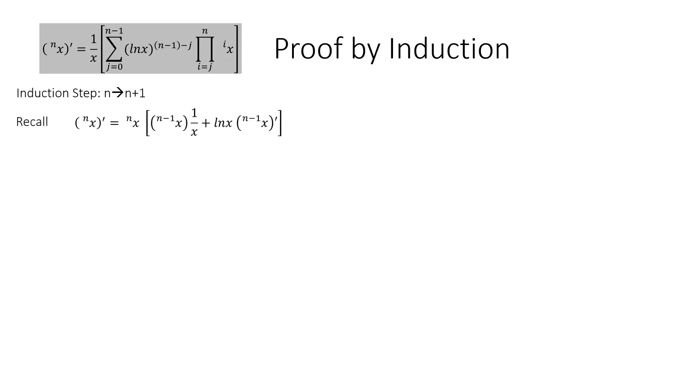Recall our recurrence formula, the one that helped us build the little green formulas. It's already proven, so we accept it. We write it as the n plus 1 version. Now plug in our conjectured formula.